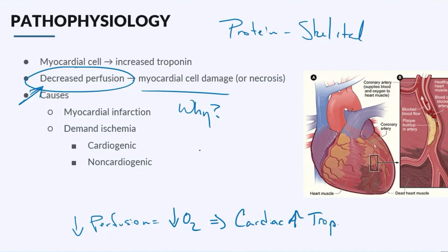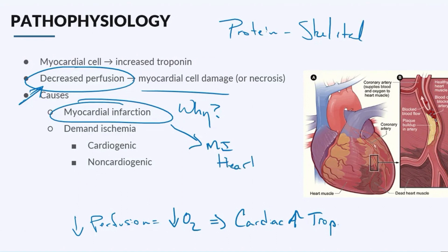The next question should be: when does decreased oxygen to the heart tissue occur? You're typically going to see this in a couple of cases, but the big one is a myocardial infarction, also known as an MI or heart attack. The other time that you're going to see decreased oxygen to the heart is something called demand ischemia, which means you have a decrease of oxygen — the ischemia — as a result of high demand.